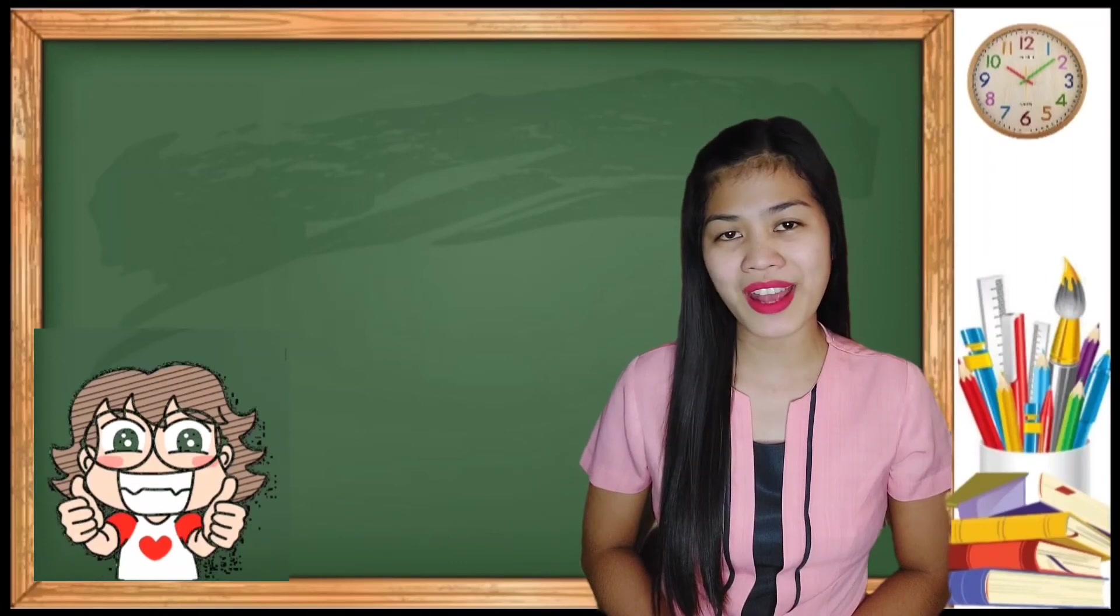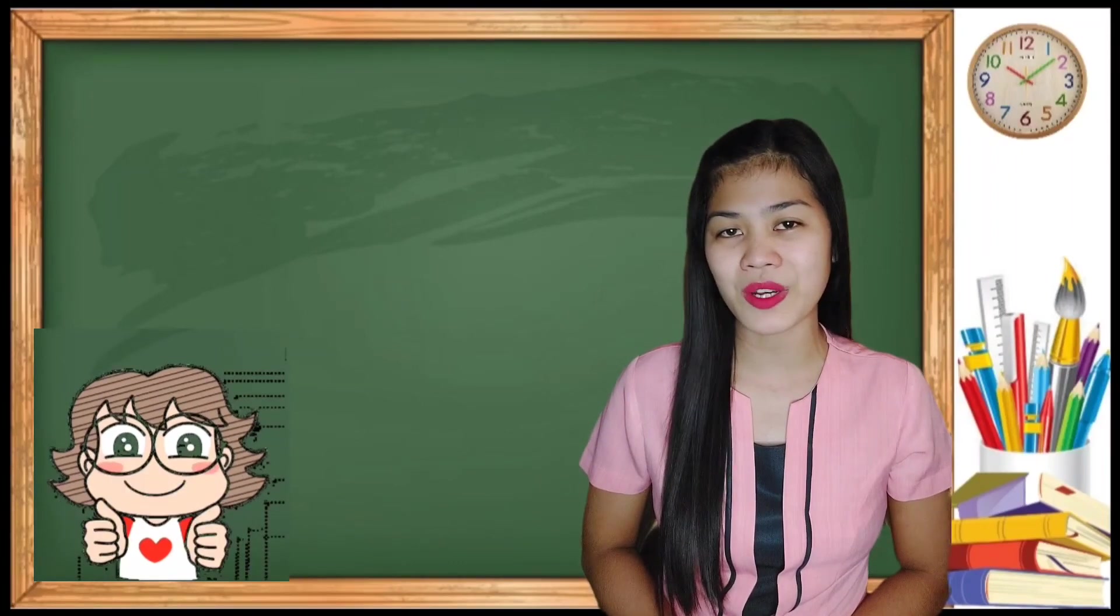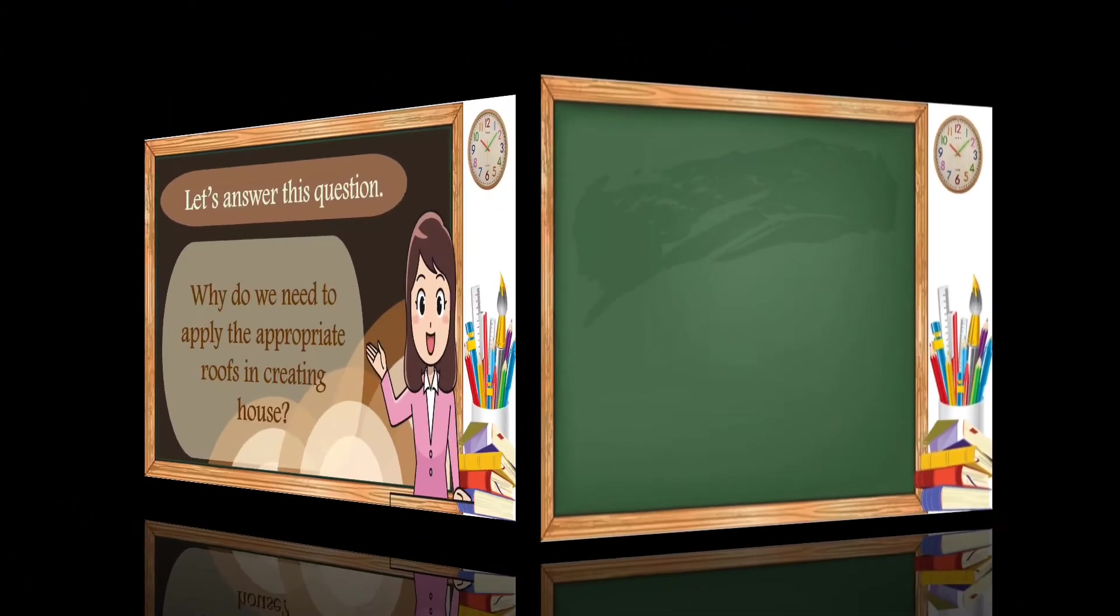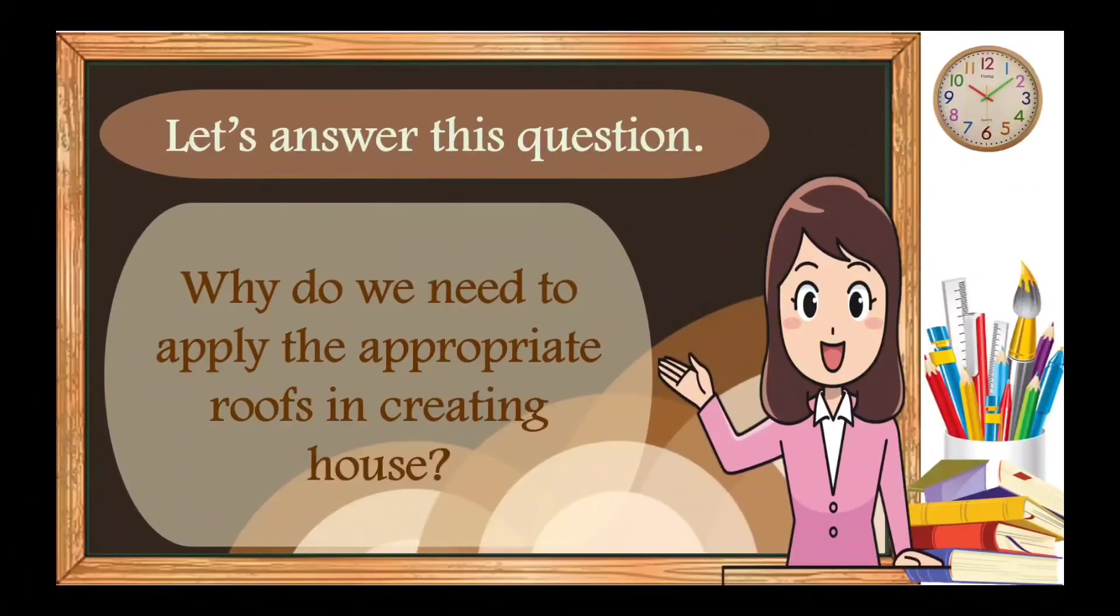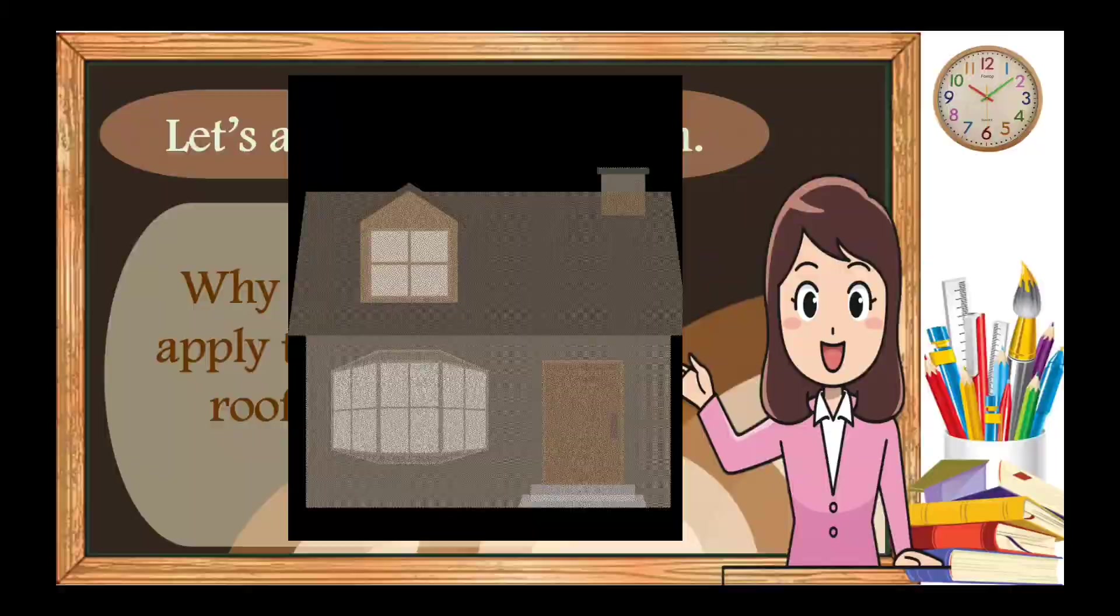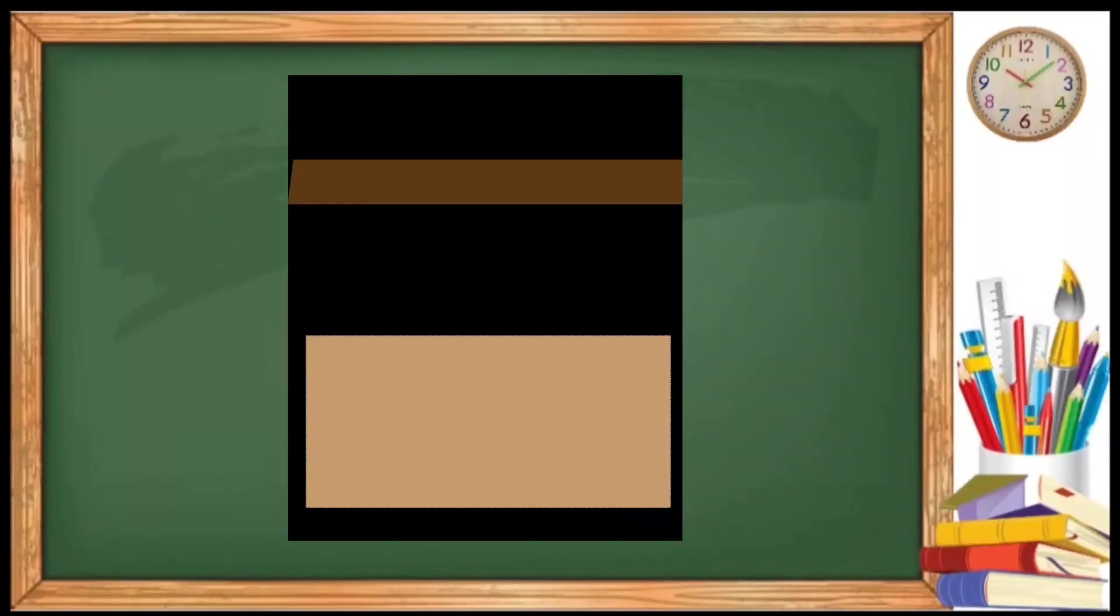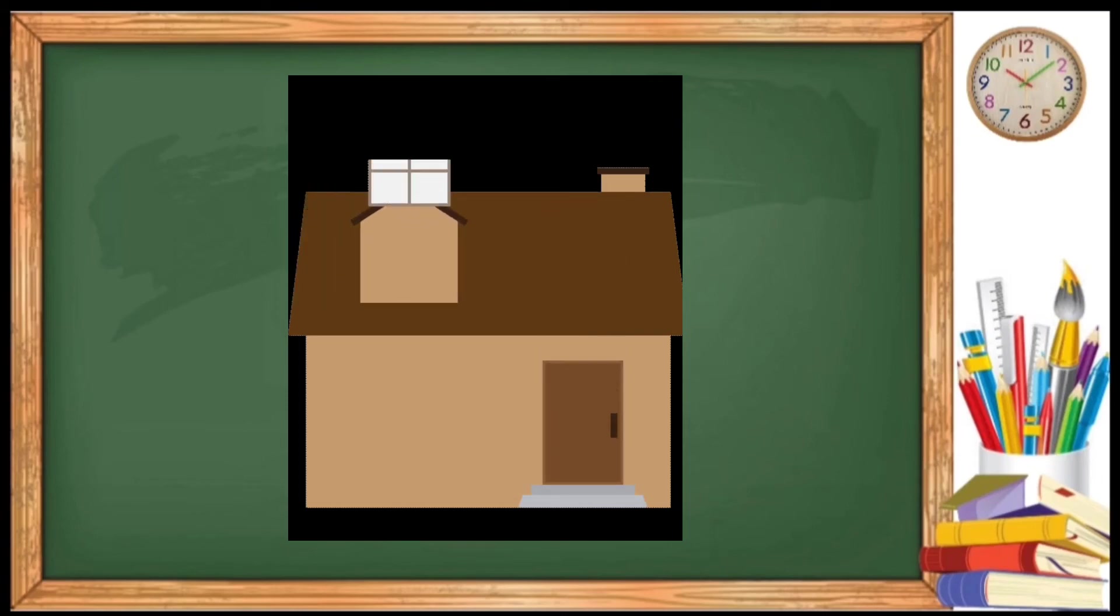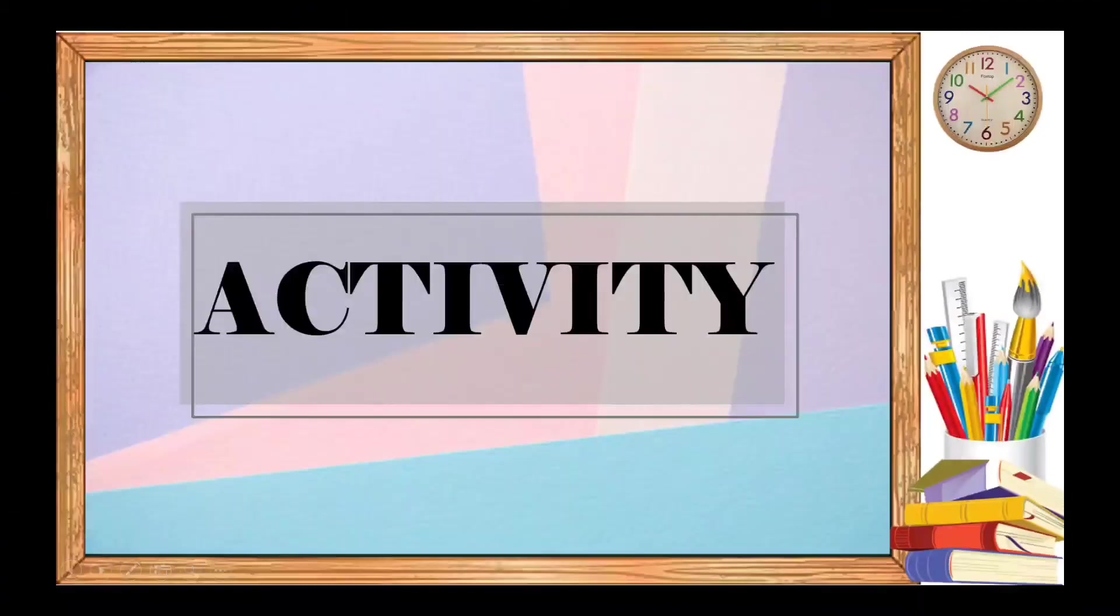Of course, the best way to check your understanding about our lesson is through the activities. At this point, let's answer this question. Learners, why do we need to apply the appropriate roof in creating house? We all know that roof is one of the most important structural of house. That's why applying appropriate roof in a simple house, poultry, or building is necessary in order to achieve your ideal designs.